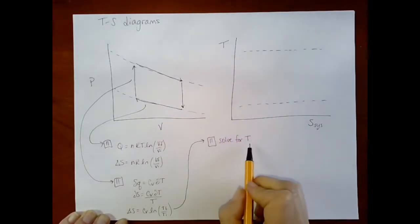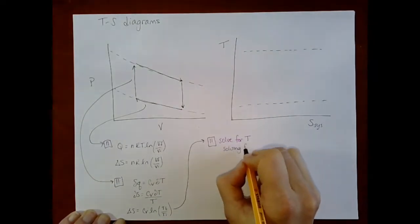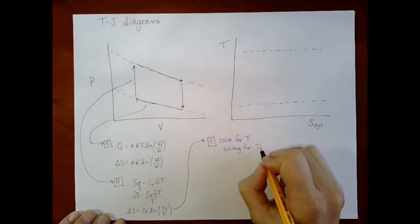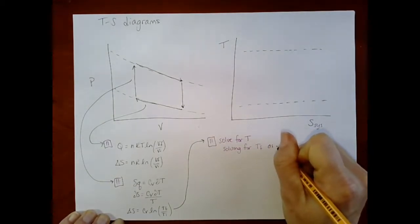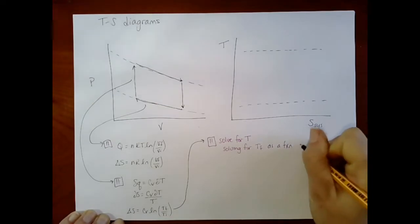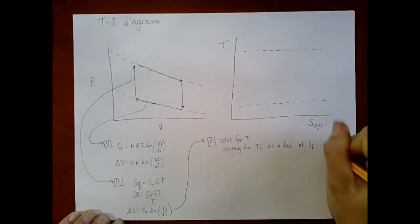When I say solve for T, really I mean you're solving for T final as a function of S final. And you're thinking about T initial and S initial as parameters or initial parameters.